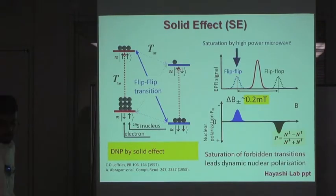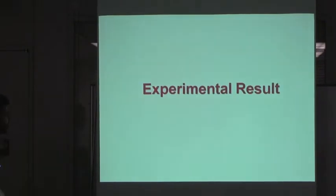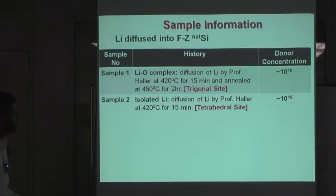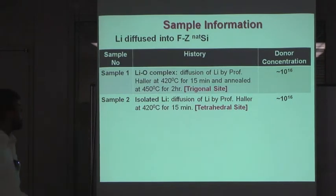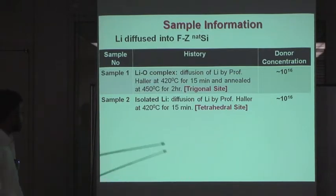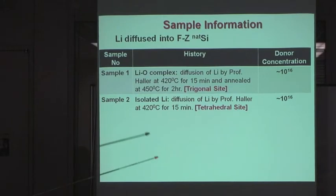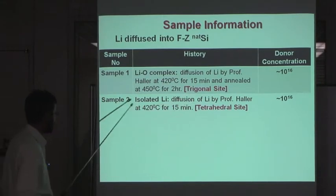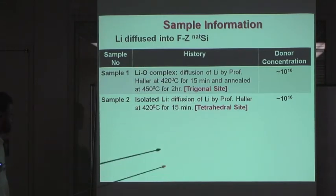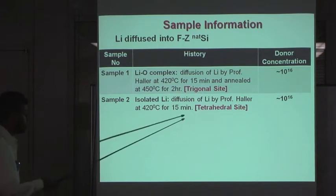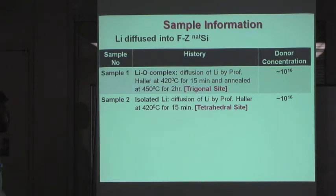Now I will explain my experimental results. Sample information: lithium was diffused into floating zone natural silicon. I have two samples. Sample 1 is a lithium-oxygen complex, which shows a trigonal site, and isolated lithium, which shows a tetragonal site. Both have a donor concentration of 10 to the power of 16.